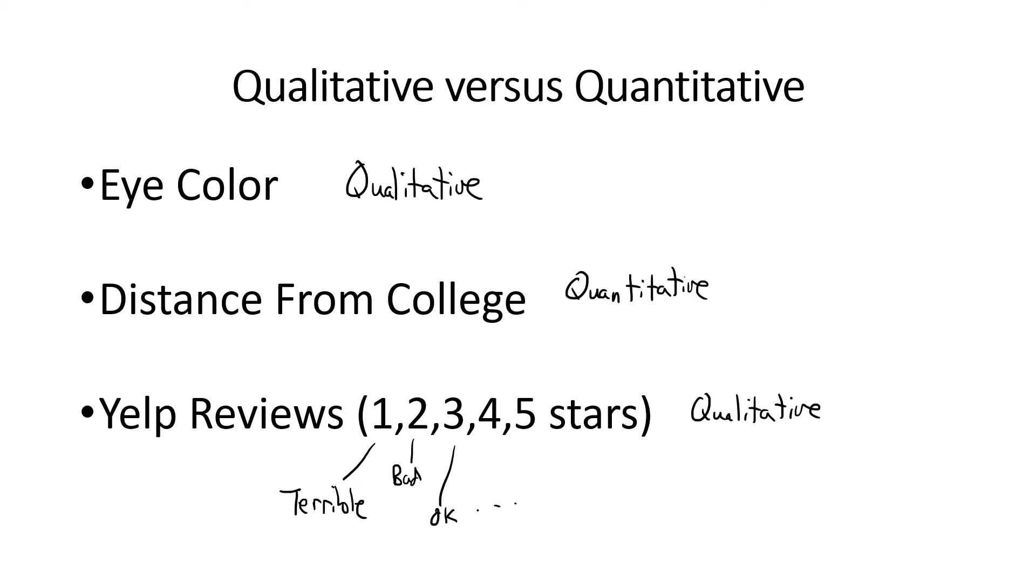If you perform arithmetic with the numerical values you have, and the differences or sums make sense, then you're dealing with quantitative data. But consider Yelp reviews of three and four stars. We know which review is better, but how much better is a four-star restaurant than a three-star restaurant? We can't measure that difference. That's what makes it categorical rather than numerical. So just because you see numbers doesn't necessarily make it quantitative. Other examples would be things like zip codes or uniform numbers for football players.